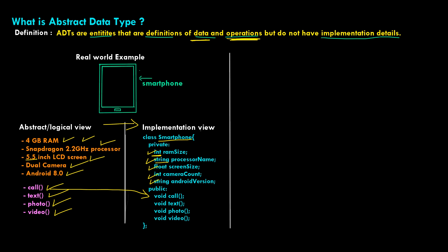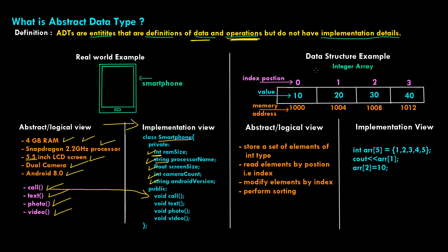Coming to the data structures world, let's take the basic integer array. Array is a data structure wherein it is a collection of elements stored at contiguous memory locations. You can see in orange the memory addresses are right next to each other: 1000, 1004, 1008, and 1012. Each integer element in C++ takes up 4 bytes, so the addresses are allocated right next to each other — contiguous in nature.